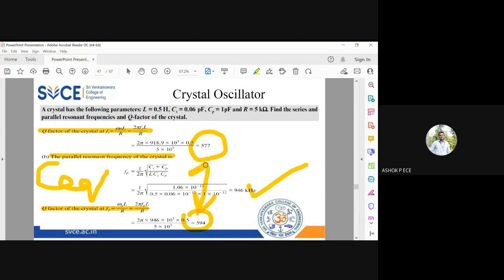Since Fs and Fp are very close, Qs and Qp will also be very close. The ideal value of quality factor for a crystal is infinity, and the practical value should be as large as possible.